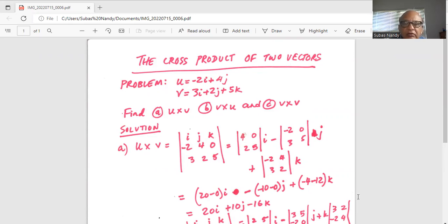And in order to find the determinant of this 3 row by 3 column, first we eliminate the first row and the first column, so i, j, k from the first row are gone, and i, -2, 3 from the first column are gone. So what are we left with: 4, 0, and 2, 5, this goes with i.